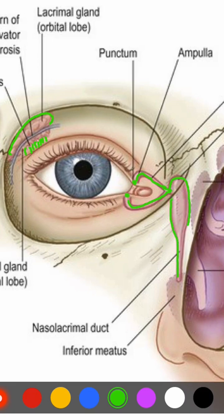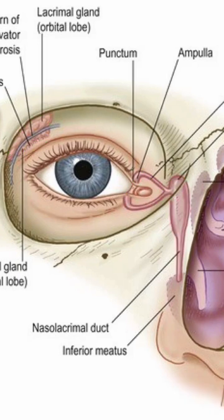The nasolacrimal duct opens into the inferior meatus of the nose. Next, we'll look at the lacrimal gland.